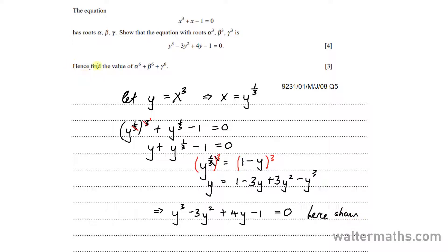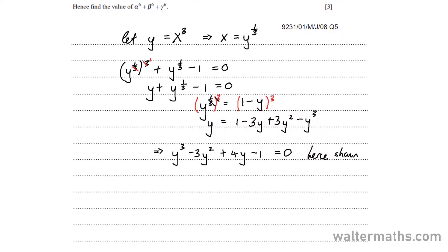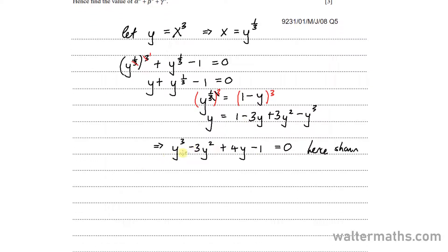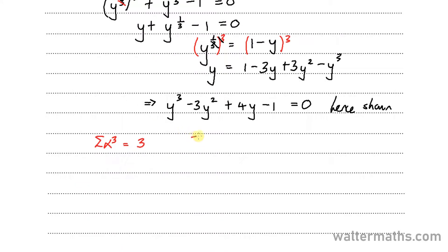Let's go on to the next part — hence find the value of alpha to the power 6 plus beta to the power 6 plus gamma to the power 6. We are going to make use of the sum of roots for this new cubic polynomial. The sum of roots of the form alpha cubed is minus b over a, which is in this case 3. The sum of product of pairs is c over a, so that's 4. And the product of roots is minus d over a, and that's 1.